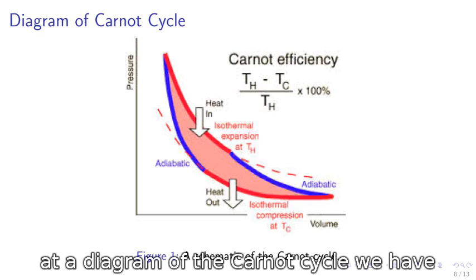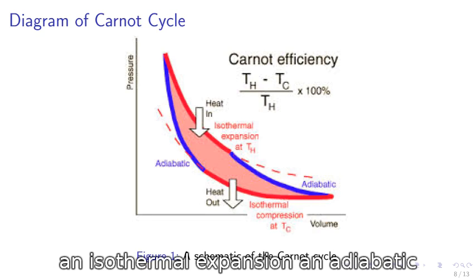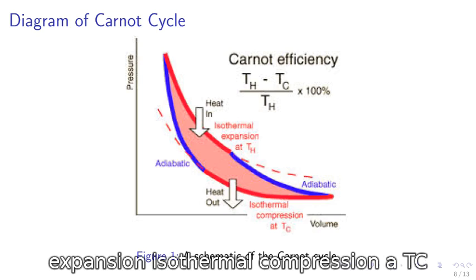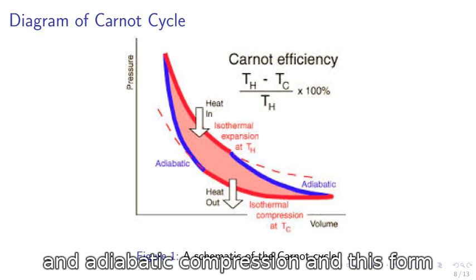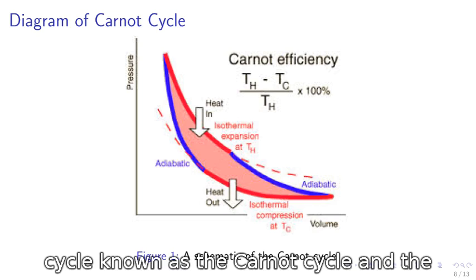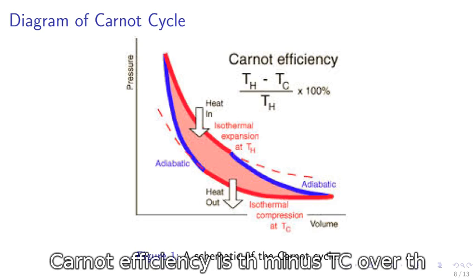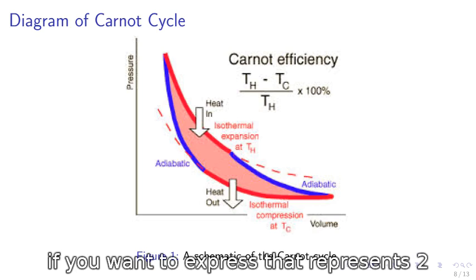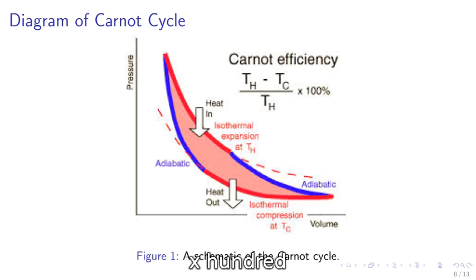Let's look at a diagram of the Carnot cycle. We have an isothermal expansion, an adiabatic expansion, an isothermal compression at TC, an adiabatic compression. And this forms a cycle known as the Carnot cycle. And the Carnot efficiency is TH minus TC over TH. If you want to express it as a percentage, you multiply by 100.